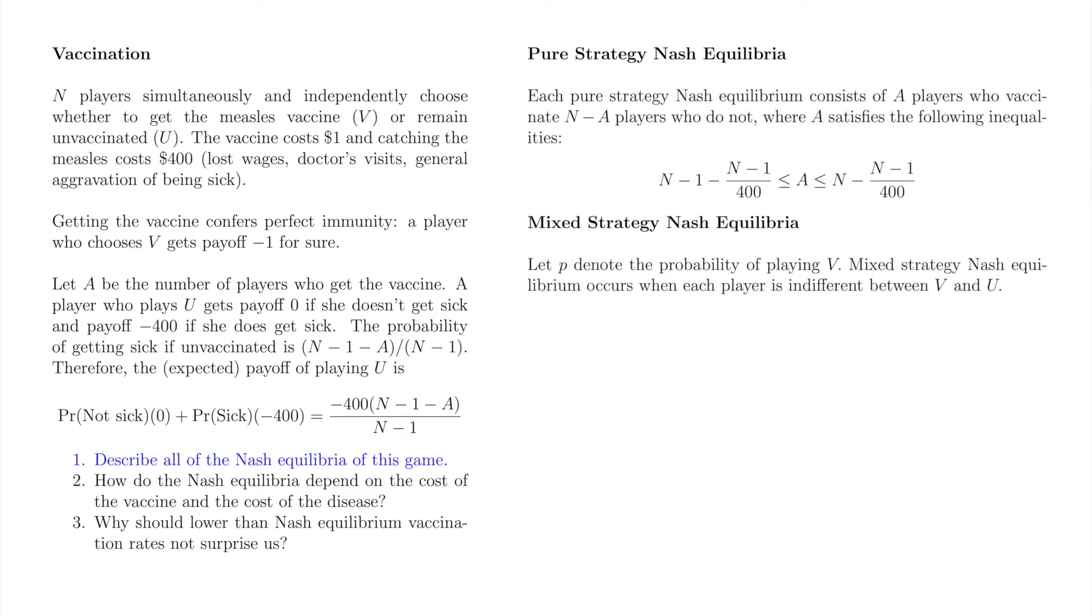Next, we'll find the mixed strategy Nash equilibrium. By symmetry, all players must play the same strategy in this Nash equilibrium. Let P denote the probability of playing V. The expected payoff of V is minus 1. The expected payoff of U requires some explanation. A player whose mixed strategy selects U incorporates the expected number of vaccinators into her expected payoff. We replace A with the expected value of A. This replacement is mathematically legal because A enters the probability of getting sick linearly, i.e. not in the denominator or through an exponent or with some power attached to it or some other weird thing. Now we've replaced E of A with (N-1) times P.